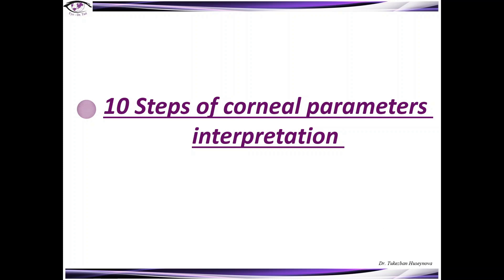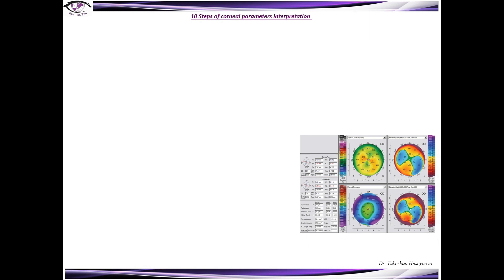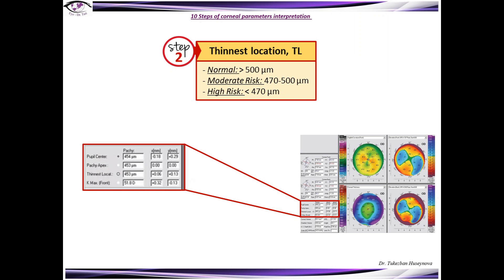Ten steps of corneal parameters interpretation. Those steps were designed with normal, moderate risk and high risk values for decision making in corneal refractive surgery. Make sure that you start your evaluation with 4 maps refractive. Start with anterior K-min. Normal value of anterior K-min should be less than 48 diopters. Step 2: Define thinness location. The normal thinness location should be more than 500 micron.